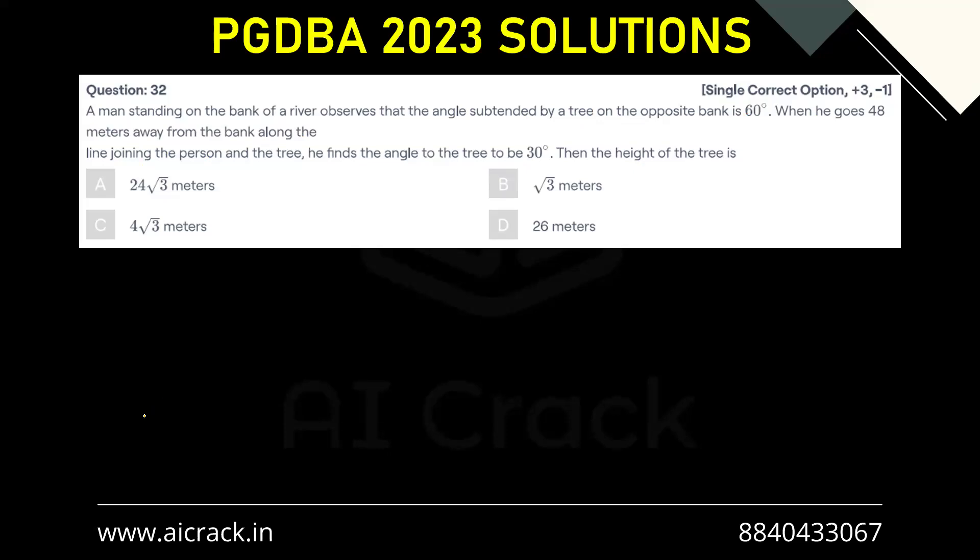So let's say this is the width of the bank, right? Let's say this is x and let's say this height is h of tree. So the person standing over here observes that this angle is 60 degrees. Now then he moved away by 48 meters and then makes the observation that this angle is 30 degrees, right?